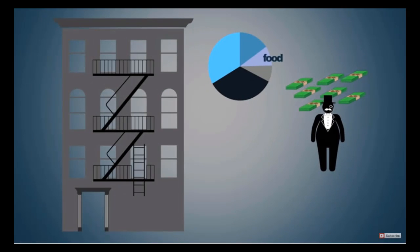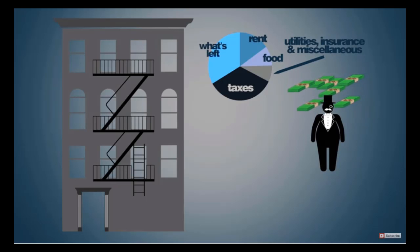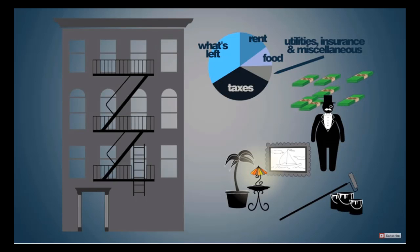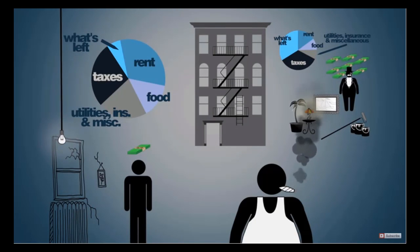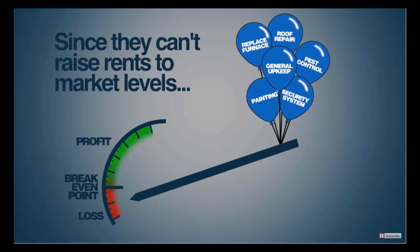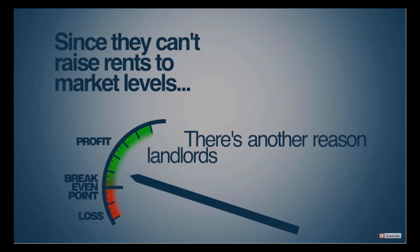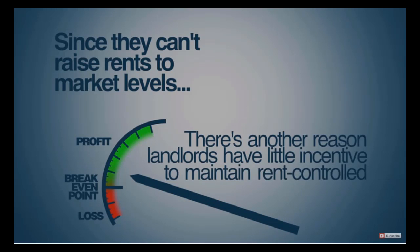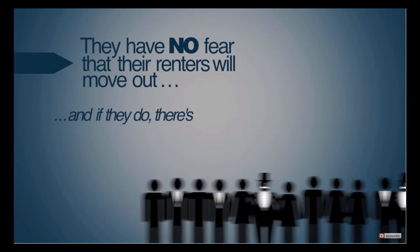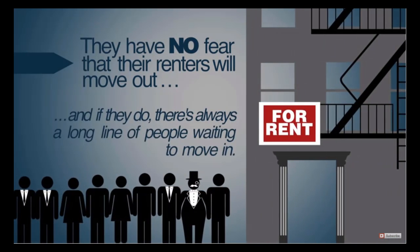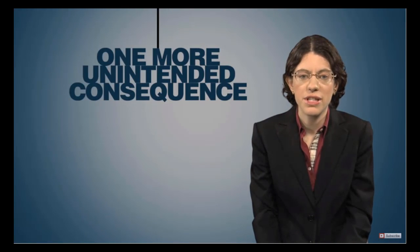The well-off who benefit from great rents have the resources — in part from the money they've saved on rents — to make their own improvements to their units: paint, redecorate, and so on. But what about the majority of renters who have much less money? They're not so lucky, because landlords can't afford to improve or even maintain their rent-controlled apartments. Since they can't raise rents to market levels, they can only make a profit by keeping their costs to an absolute minimum. And landlords have little incentive to maintain rent-controlled apartments — they have no fear that their renters will move out, and if they do, there's always a long line of people waiting to move in.